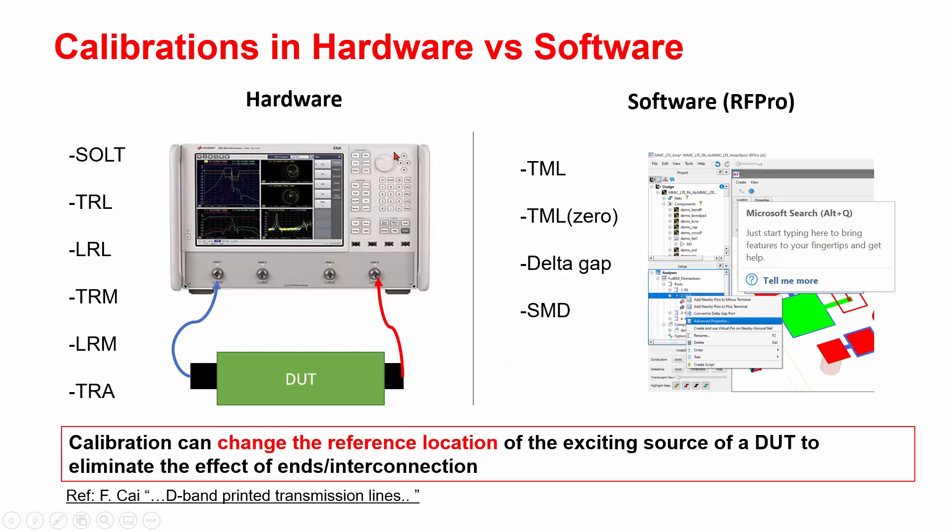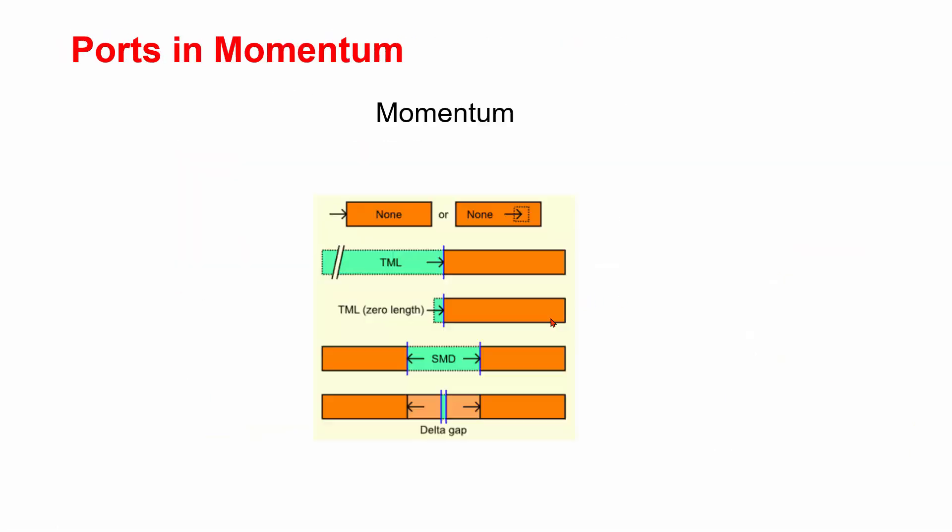So why do we need a calibration? In hardware, we have various calibration methods to change the reference location of the exciting source of a DUT. In software, similarly, we want to use the calibration to change the reference location.